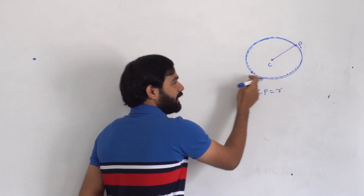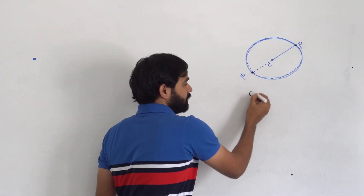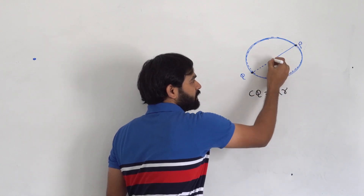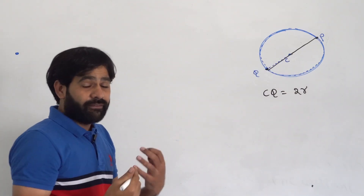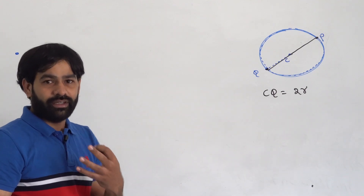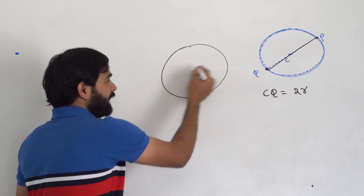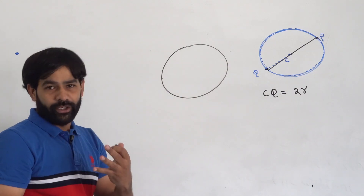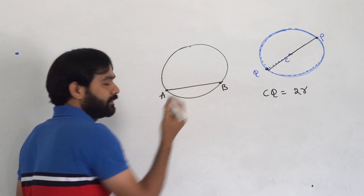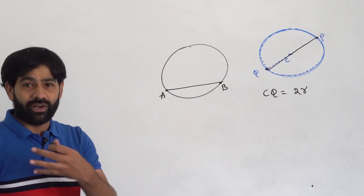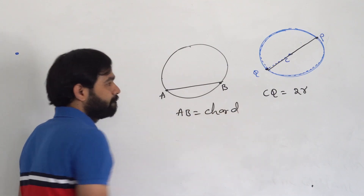If I take a point Q which is diametrically opposite to point P, then CQ is going to be twice the radius — you have radius on each side — so it equals twice the radius. Now look here: if you take any two points on the circle and join them, what do you call that? That is called a chord. AB is called the chord, and PQ is called the diameter.